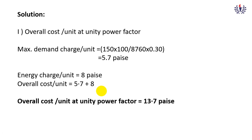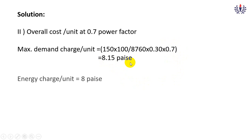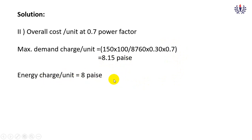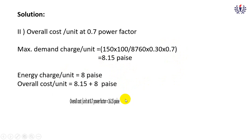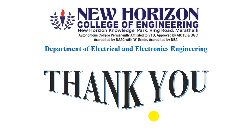At unity power factor: maximum demand charge per unit = (150 × 100) ÷ 8760 = 5.7 pies; energy charge = 8 pies; overall cost = 13.7 pies per unit. At 0.7 power factor: maximum demand charge per unit = 8.15 pies; energy charge = 8 pies; overall cost = 16.15 pies per unit. The increase shows that lower power factor leads to higher cost. These are all the problems based on tariff.